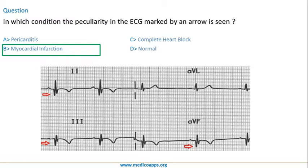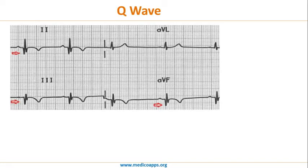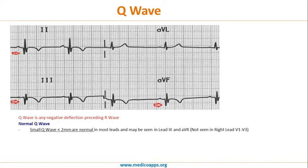Let's learn a little more about Q waves. A Q wave is any negative deflection preceding the R wave. Q waves are normally seen in most leads except V1 to V3. Normal Q waves are less than 2 mm deep — that is, not more than two small squares on the ECG paper.